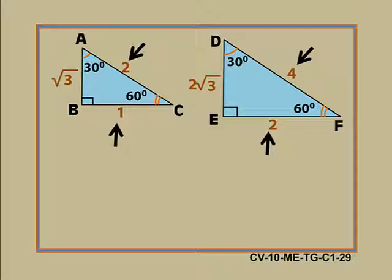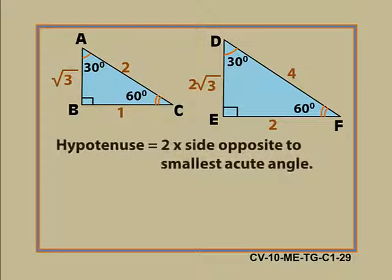Yes, hypotenuse can be obtained by multiplying this side by 2. That is BC into 2 is AC and EF into 2 is DF. Therefore, we have hypotenuse which is equal to 2 into side opposite to smallest acute angle.